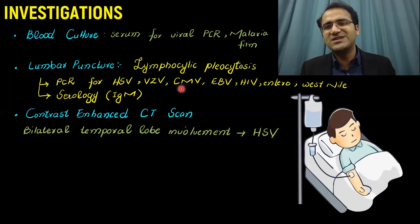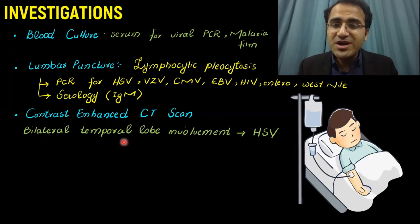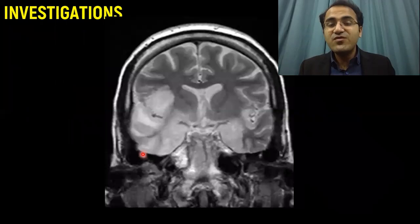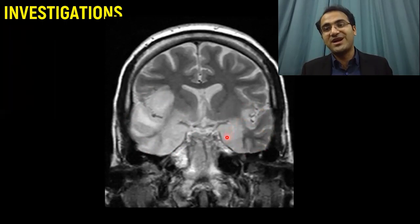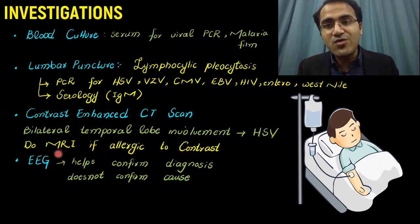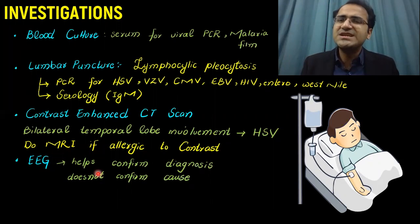Contrast enhanced CT scan should be done. It shows bilateral temporal lobe involvement if HSV is the cause. HSV commonly causes Encephalitis and involves bilateral temporal lobes. So if you receive a CT scan like this and see the temporal lobes are involved, this temporal lobe involvement occurs in herpes simplex virus Encephalitis. If the patient is allergic to contrast, you can go for MRI. EEG is also helpful in confirming the diagnosis but does not confirm the cause — it will only show that the patient is in a deep comatose or altered state.